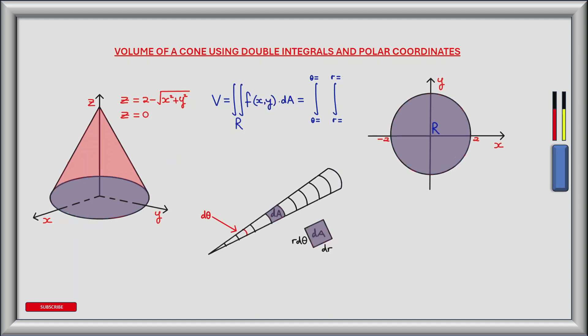Let's take a closer look at what happens when we integrate in the r direction — this represents the inner of the two integrals. This diagram shows a sector of the region R. The angle it makes is infinitesimally small, denoted dθ. Within the sector an infinitesimally small piece of area dA has height dr and width r dθ, so dA equals r dr dθ.